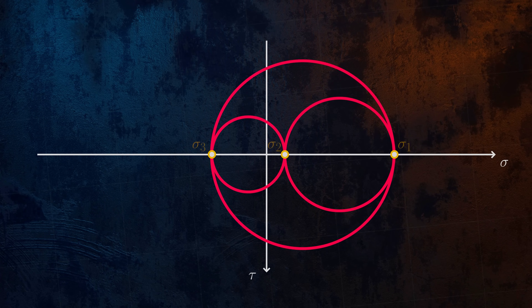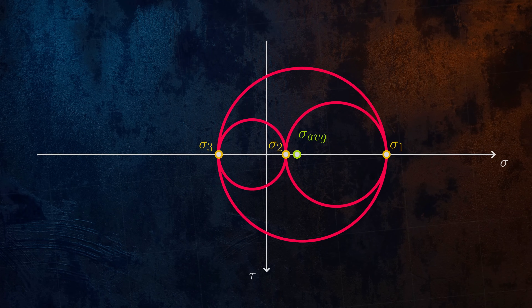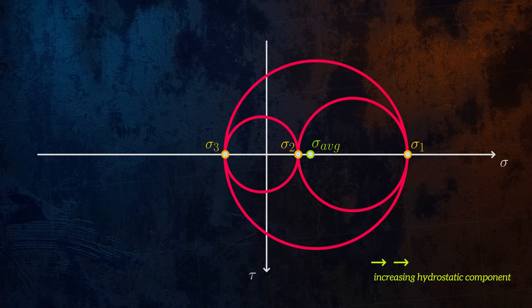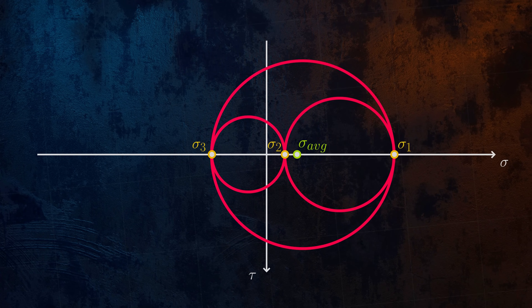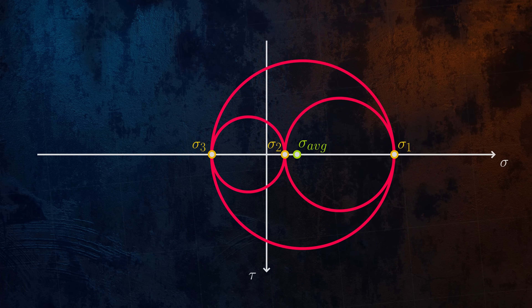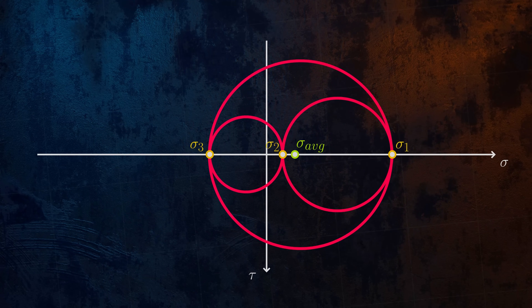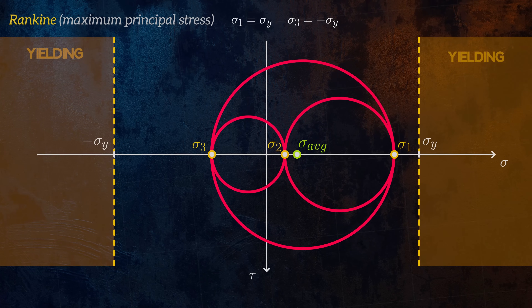It can be helpful to use Mohr's circle to understand the hydrostatic and deviatoric components of a triaxial stress state. For a hydrostatic stress configuration, there are no shear stresses, and so Mohr's circle reduces to a single point equal to the average of the three principal stresses. Shifting Mohr's circle horizontally represents an increase in the hydrostatic component, and increasing the radius without changing the average stress represents an increase in the deviatoric component. Since failure of ductile materials only depends on the deviatoric component, a good failure theory should produce the same result regardless of where Mohr's circle is located on the horizontal axis. This explains why maximum principal stress theory is not a good failure theory for ductile materials — it isn't consistent with the observation that yielding is independent of hydrostatic stress.